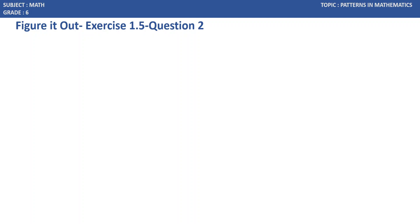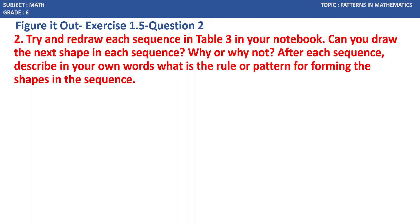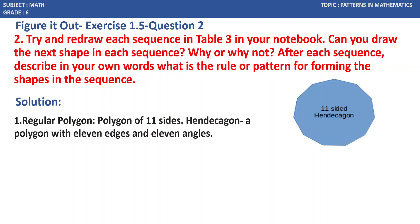Let us see question number 2 of exercise 1.5. Second question. Try and redraw each sequence in table 3. Hope you might have recalled this table 3 in your notebook. Can you draw the next shape in each sequence? Why I, why not? But after each sequence, describe in your own words, what is the rule or pattern for forming the shapes in the sequence? See, in this table 3, we have seen till decagon, which is having 10 sided. After 10, what is the next number? It is 11. So, the next regular polygon is a polygon of 11 sides. The name of this 11 side we call hendecagon. A polygon with 11 edges and 11 angles.